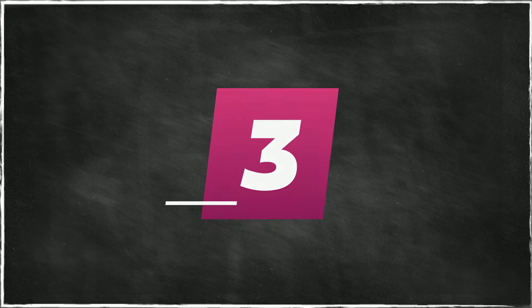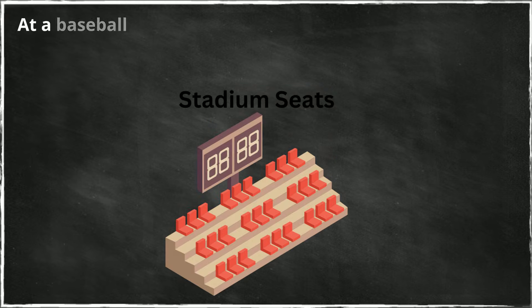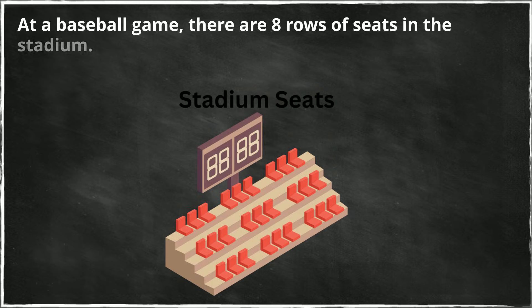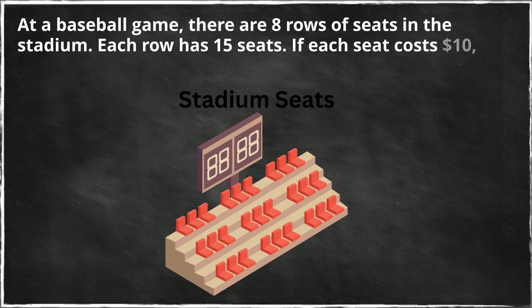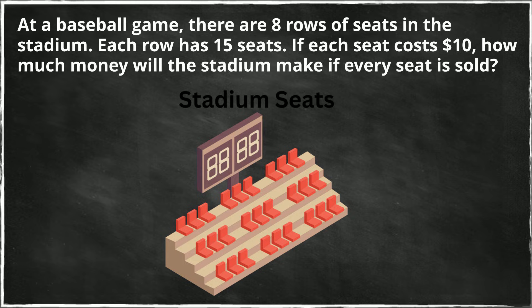At a baseball game, there are eight rows of seats in the stadium. Each row has 15 seats. If each seat costs $10, how much money will the stadium make if every seat is sold?